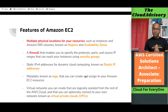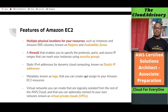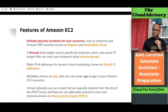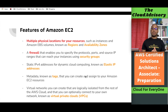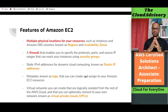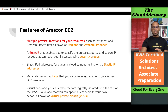We can also launch these instances in a private network. In Amazon Web Services we can create our own private network, known as a Virtual Private Cloud (VPC). This is a separate networking module that we will cover later. Those are the different terms and features we need to know and understand regarding Amazon EC2.